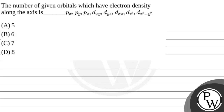Hello children, let's read this question: the number of given orbitals which have electron density along the axis is blank. So we have some orbitals given here - we can see px, py, pz, dxy, dyz, dxz, dz² and dx²y². We will tell you the number of given orbitals which have electron density along the axis.